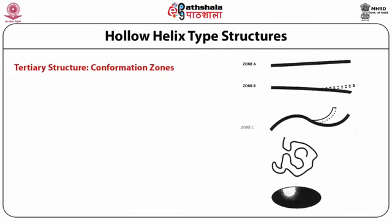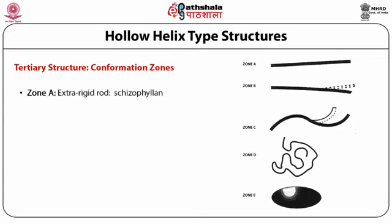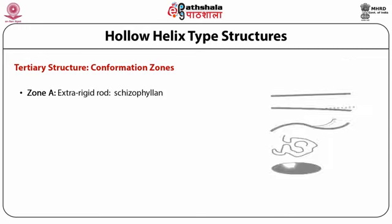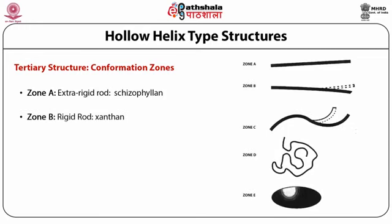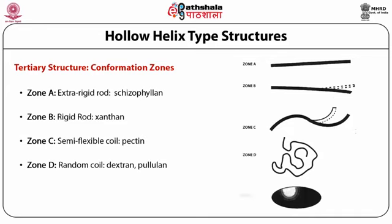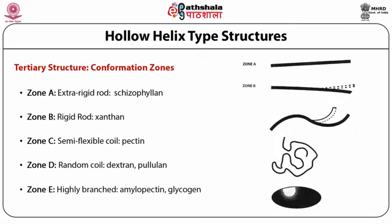The conformational zones of polysaccharides are classified as Zone A through E. Zone A is an extra rigid rod conformation. Zone B is a rigid rod — example is xanthan. Zone C is a semi-flexible coil — example is pectin. Zone D is a random coil — examples include dextrin and pullulan. Zone E is highly branched, including amylopectin and glycogen. These zones categorize complex carbohydrates by their tertiary structure and conformation.